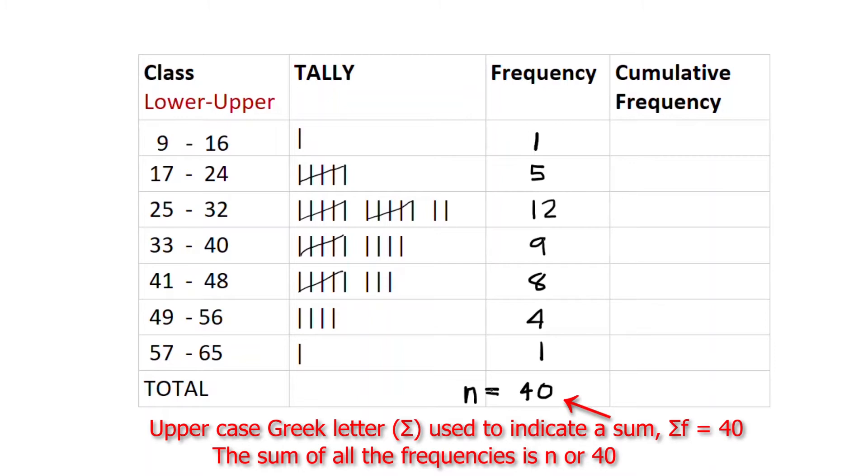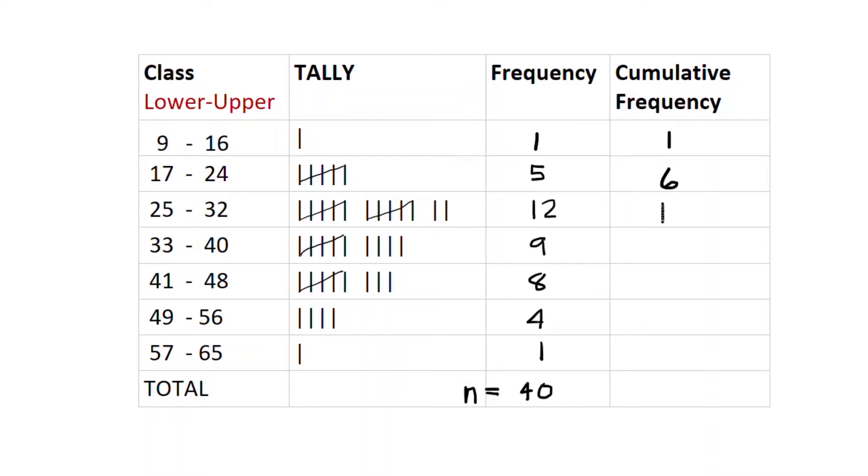If we want to do the cumulative frequency, we start with the first one, one, and then we just keep a running total. That's what the cumulative frequency is. So 1 plus 5 is 6. And then 6 and 12 is 18. 18 and 9 is 27. We just keep that running total all the way through. And, of course, at the end, we expect it to add up to 40. And it does. So there's our frequency distribution.